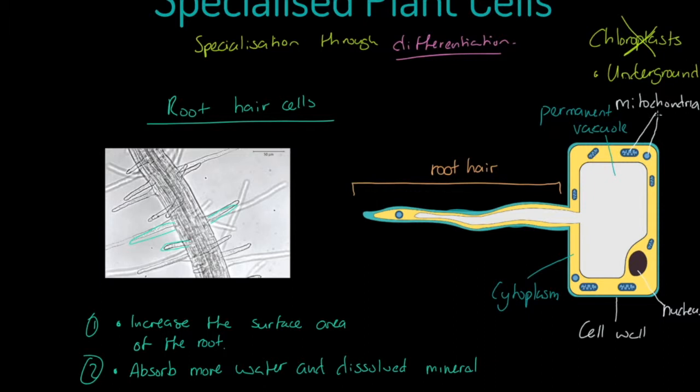The mitochondria are the main site of aerobic respiration where we get the release of energy. The root hair cells are differentiated to perform their function: to increase surface area and to absorb more water through osmosis and more dissolved minerals through the process of active transport.